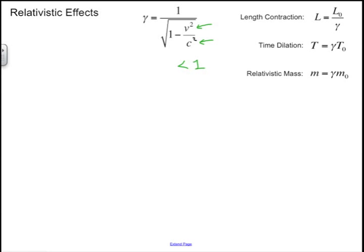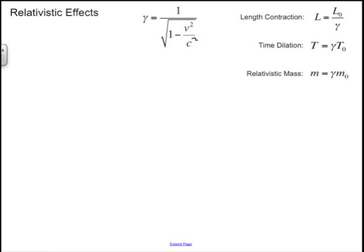If I take 1 minus that quantity, I still end up with another quantity less than 1. If I take the square root of a number less than 1, I get again another number less than 1. And then if I have 1 over this whole pile of stuff, knowing it's still less than 1, then 1 over a number less than 1 returns something greater than 1. So gamma is always going to be greater than 1.